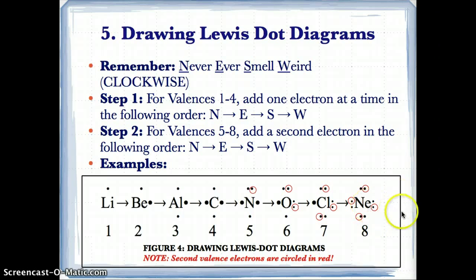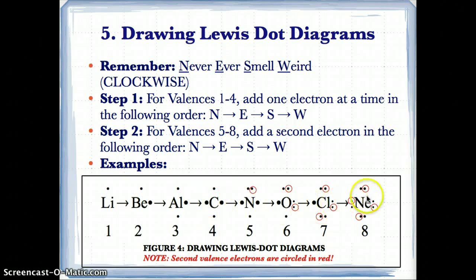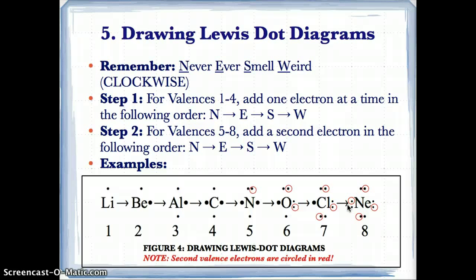To summarize: for valences 1 to 4, go north, east, south, west — one electron at a time. For valences 5 to 8, go around again clockwise adding a second valence electron at north, east, south, and west. The second valence electrons you can circle in red to distinguish them, and the first valence electrons you don't circle at all. So the maximum total is 8, with 2 at each of the four sides.